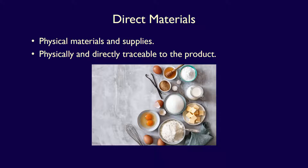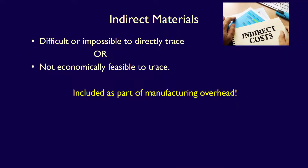Direct materials are the physical materials and supplies which can be directly traced to the production of a product. There may also be indirect materials — materials and supplies that either cannot be directly traced or whose value is so small that it's not worth tracing directly. Indirect materials are part of the third category of manufacturing costs, called manufacturing overhead.